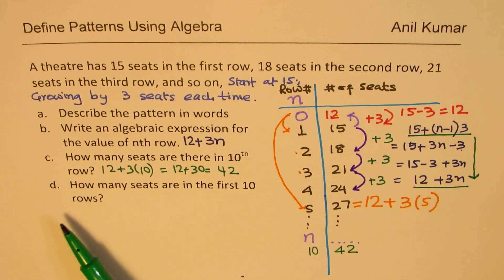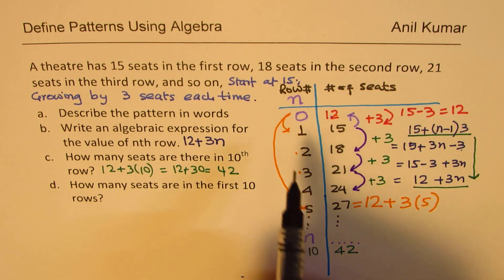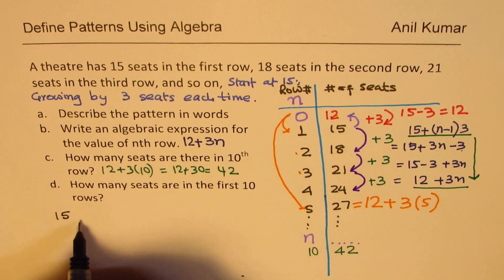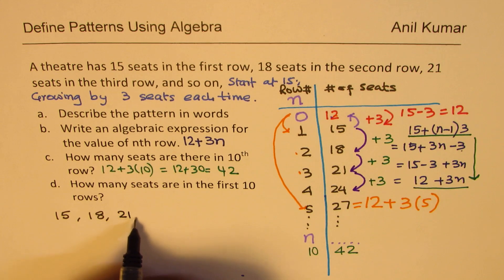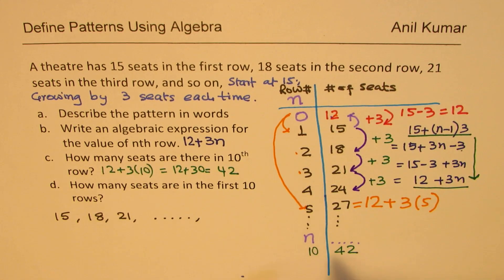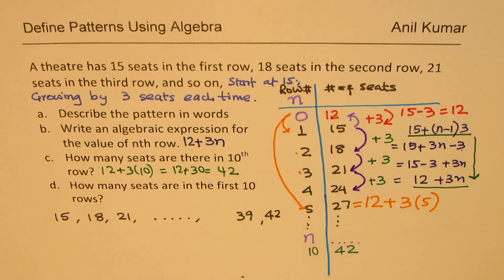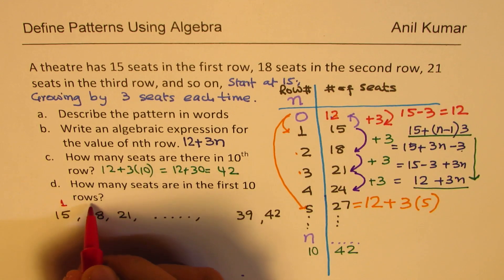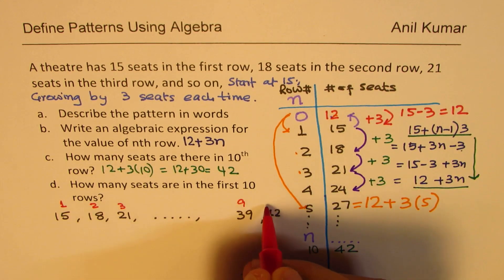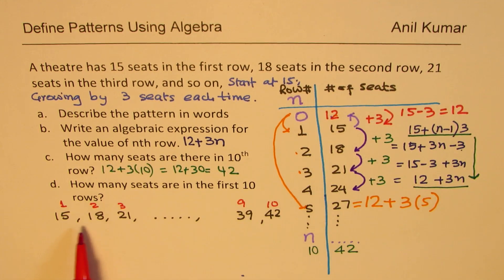Now the last question is also a very difficult question. How many seats are there in the first 10 rows? How do you do this? Well, think about it. In the first row, we got 15. And then we got 18. And then we got 21. And then we got so on. And then 10th row is 42. Before that, we'll be 3 less. That means 39. Before that, 3 less and so on. So these are our number of seats per row number. We need to add all these numbers.